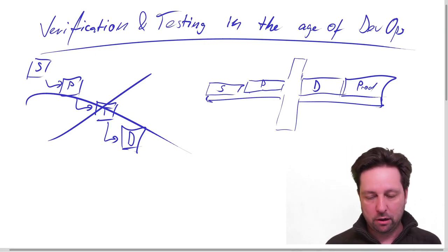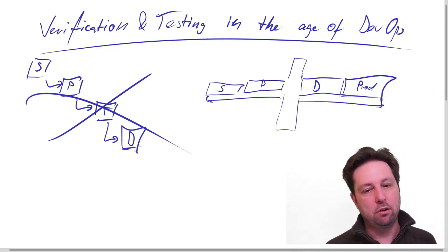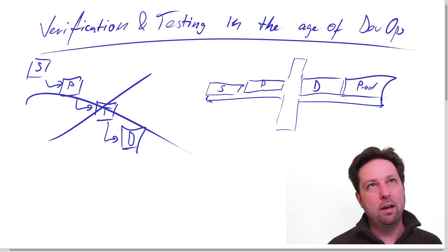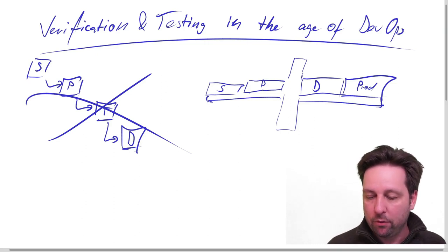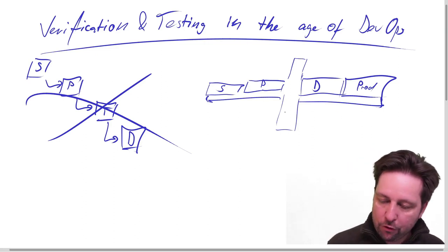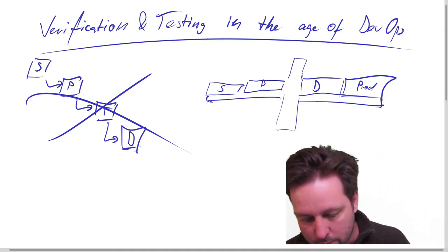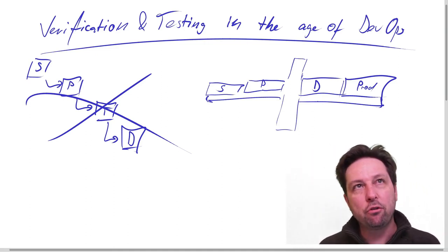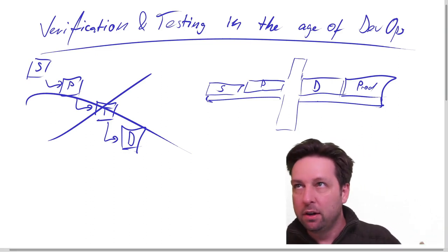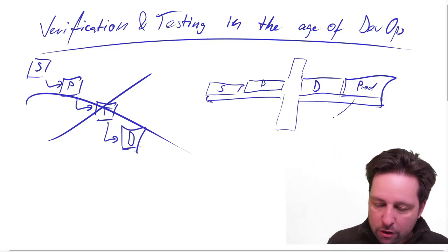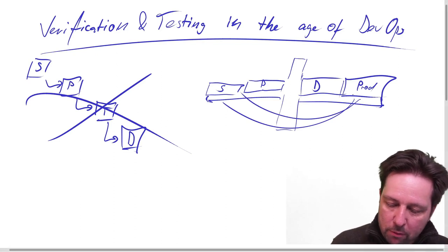As you are developing the actual product, you should be thinking about how you're going to verify this, how you're going to ensure that what you're creating is the right thing and it does its job correctly. And so it goes until you reach production, where you still have testing in production, monitoring—all of these things that continuously give you feedback.